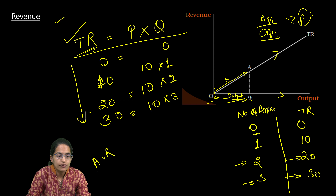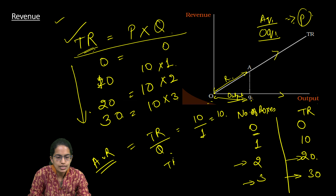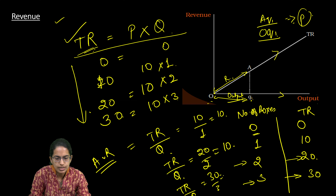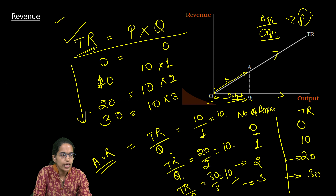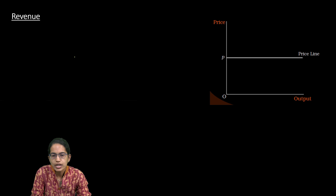What is average revenue? Average revenue is nothing but total revenue divided by quantity. For example: 10 divided by 1 equals 10; 20 divided by 2 equals 10; 30 divided by 3 equals 10. Therefore, average revenue is nothing but the price itself in the case of perfect competition.